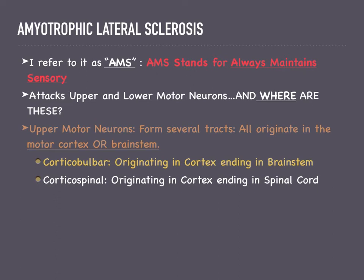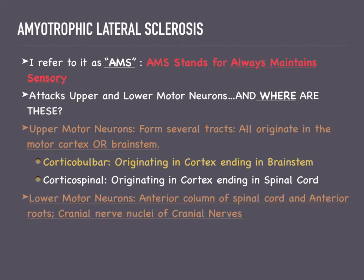The upper motor neurons communicate with lower motor neurons. The lower motor neurons are located in the anterior column of the spinal cord and anterior roots, as well as in the brain in the form of cranial nerve nuclei.